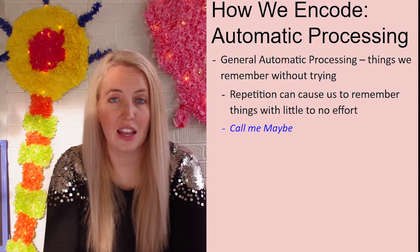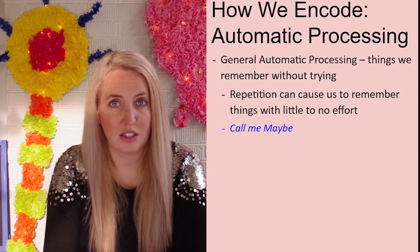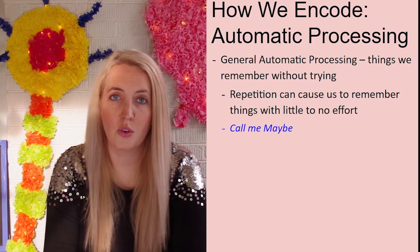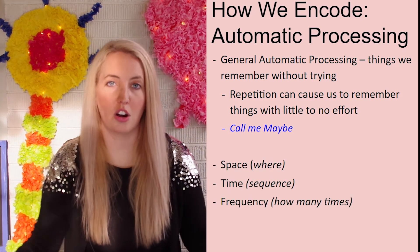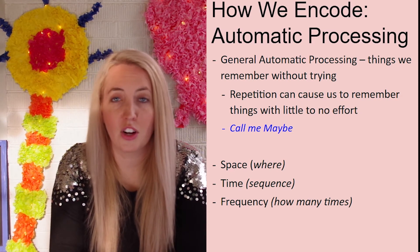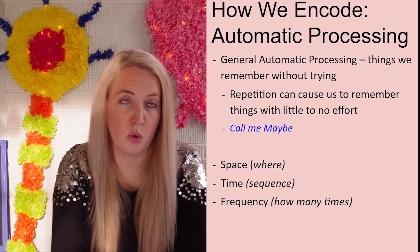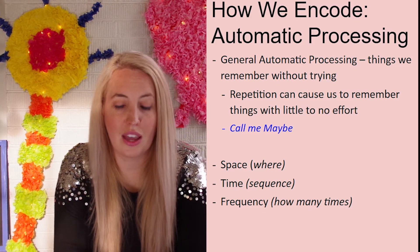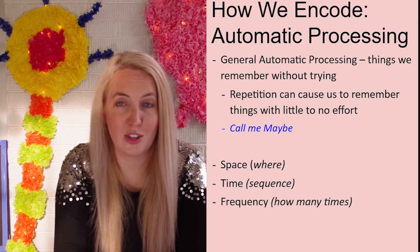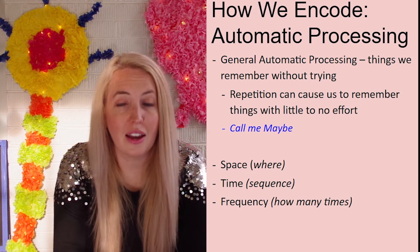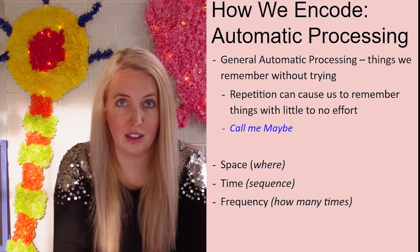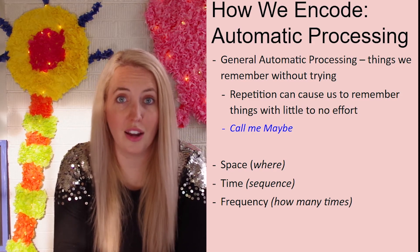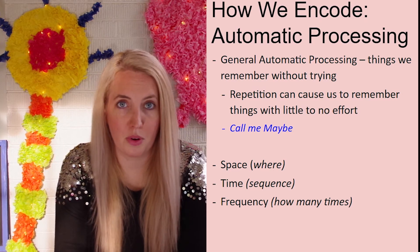Other ways we move things into long-term memory automatically are known as space, time, and frequency. Space refers to where things are located. If you forgot your lunch at home but can close your eyes and visualize it on your kitchen counter or at your desk — that is automatic space processing. You didn't have to do anything to remember it; it happened pretty automatically.